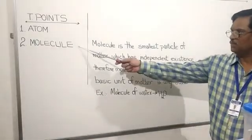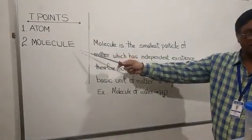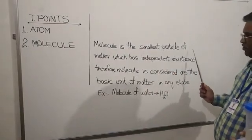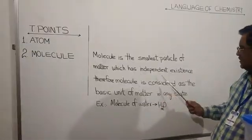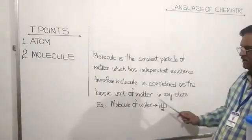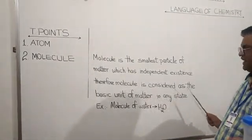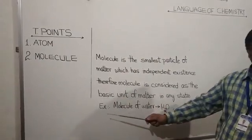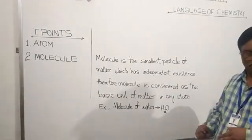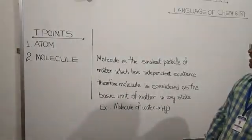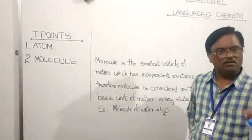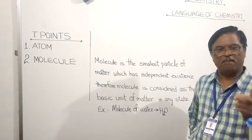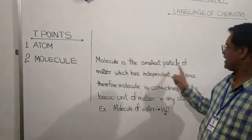Next is molecule. Molecule is the smallest particle of matter which has independent existence. Therefore, molecule is considered as the basic unit of matter in any state. Example: the molecule of water is H2O. We know that a molecule is made up of atoms — when two or more than two atoms combine chemically, they form a molecule. This molecule is the smallest particle of matter.